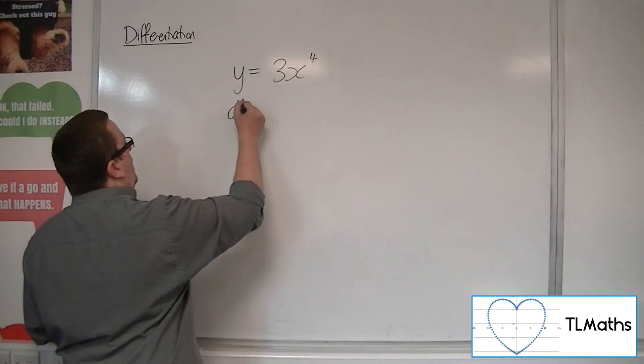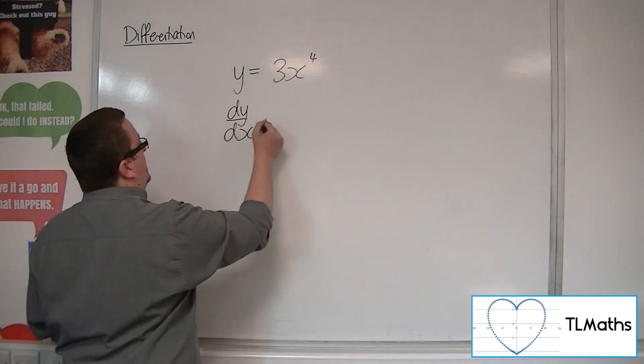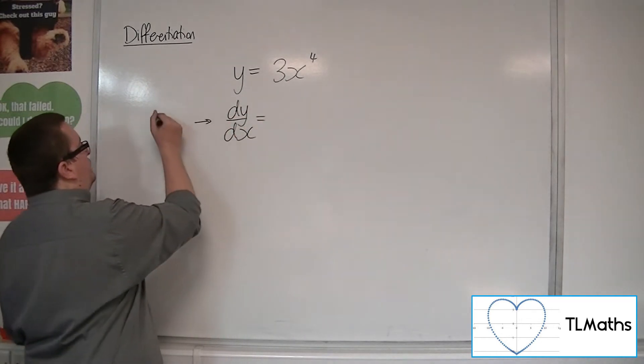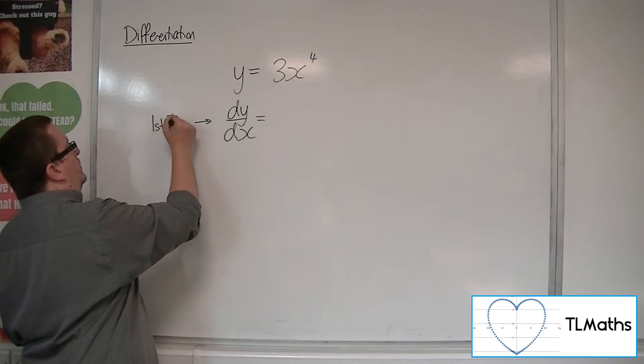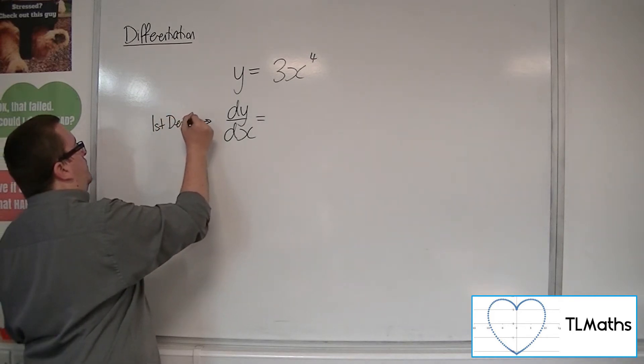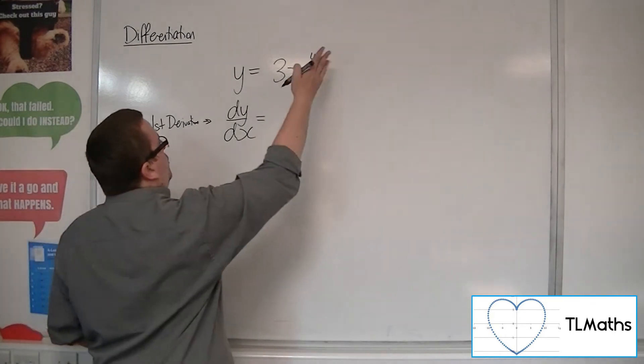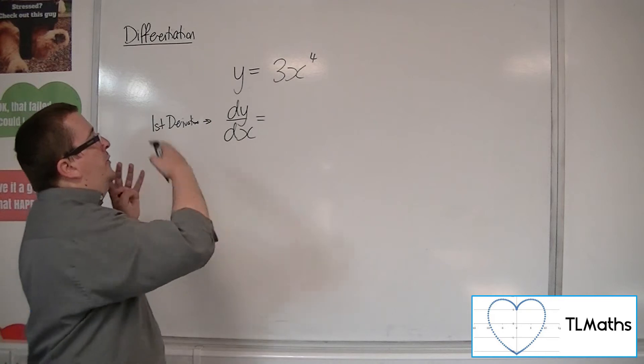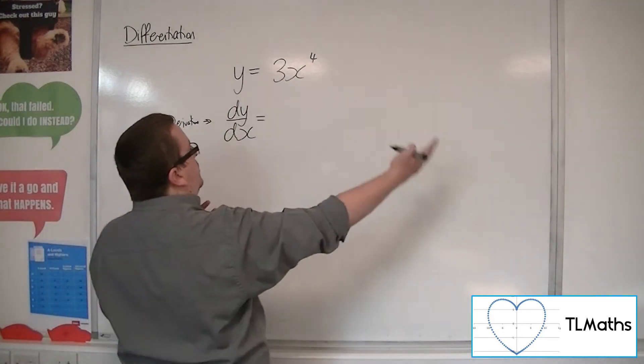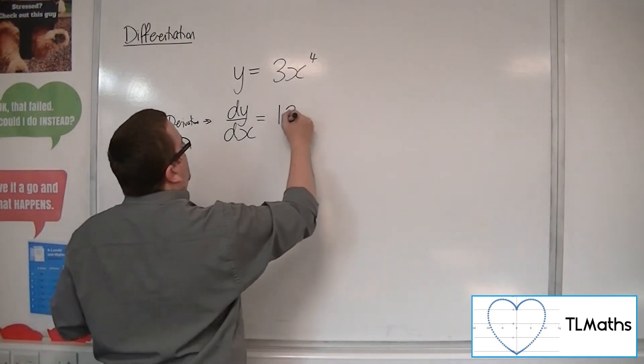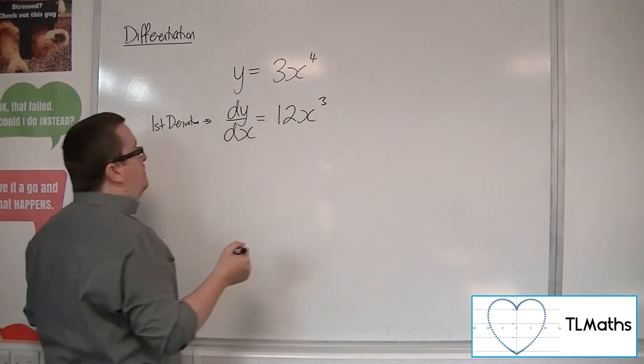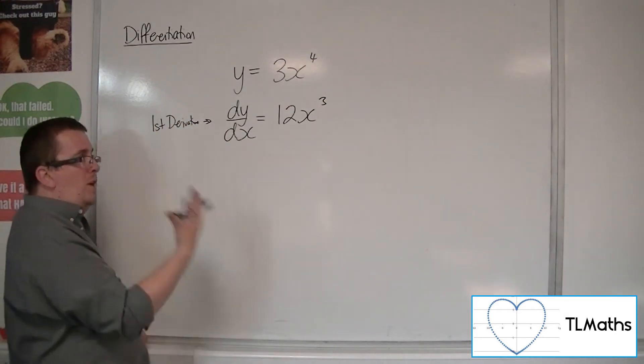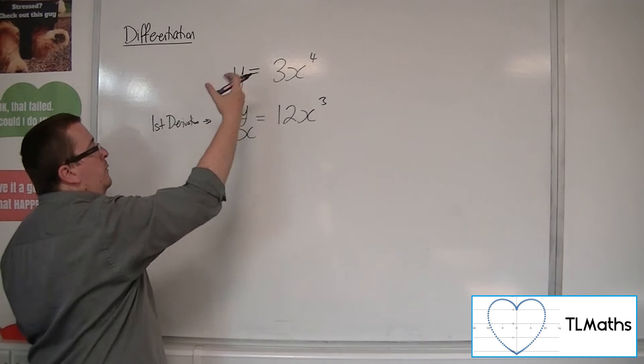Then the first derivative is dy by dx. So that's your first derivative. The 4 can come down to the front, so we've got 3 lots of x to the 4, so it's 3 lots of 4x to the 3. So 12x to the 3. That's your first derivative. That's the rate of change of y with respect to x.